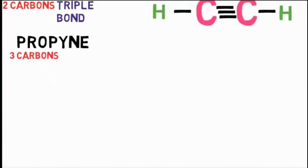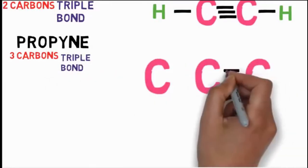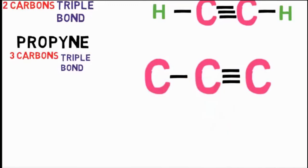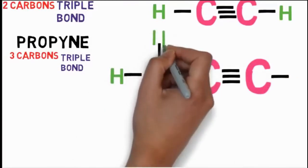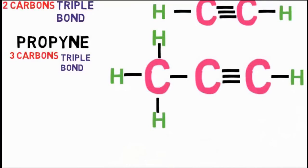Propyne: it has prefix 'prop' meaning three carbons and 'yne' meaning carbon-carbon triple bond on any pair. Insert single bonds between each remaining carbon pair. The next carbon has four bonds already — no more bonds remain. The last carbon has three bonds — add one more. Add hydrogen to each bond. This is our propyne ready.